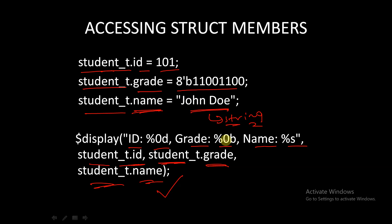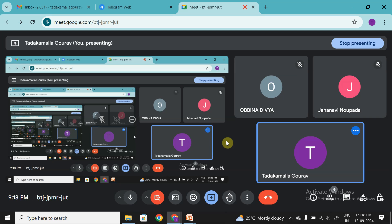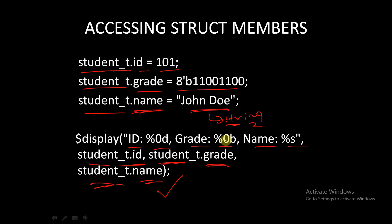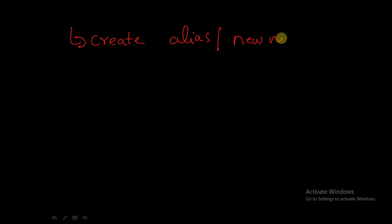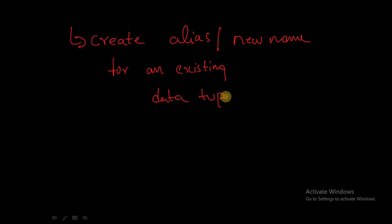Next, coming to user-defined data types. These help you create an alias or new name for an existing data type. This helps to simplify complex types and improve code readability. It also lets you define custom data types such as struct, union, and enum. So basically these are used to create an alias or new name for an existing data type.